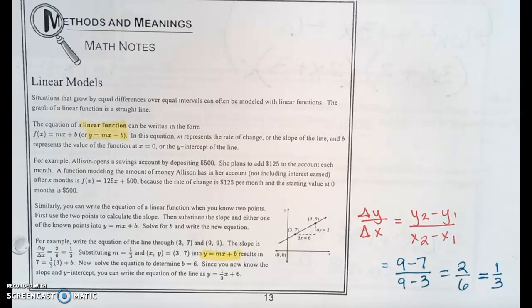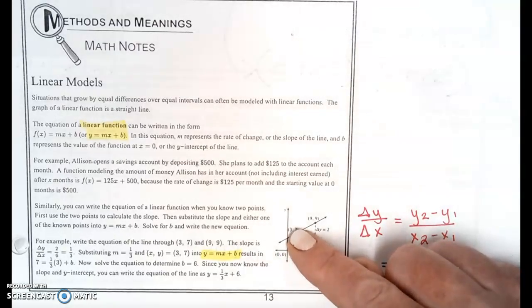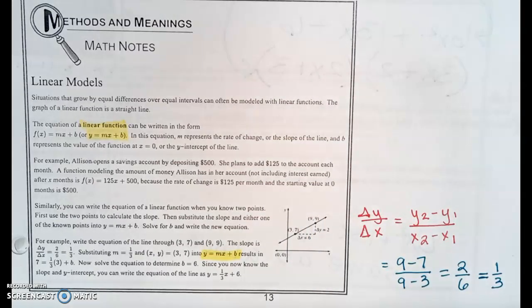And so the slope is 2/6, but I can reduce that. 2/6 reduces to 1/3. So with a slope of 1/3, when you're graphing 1/3, it means to go up 1 over 3. Which is the same as going up 2 over 6. You're going to get to the same spot. It's just reduced.